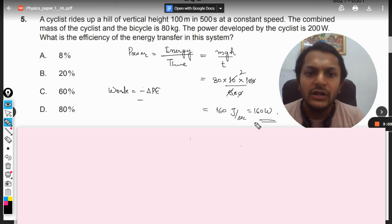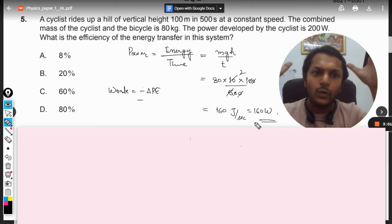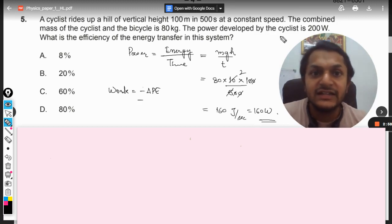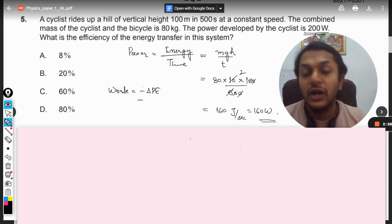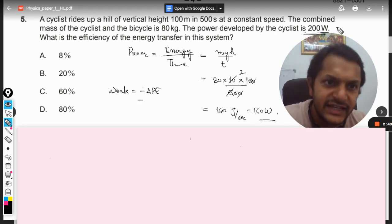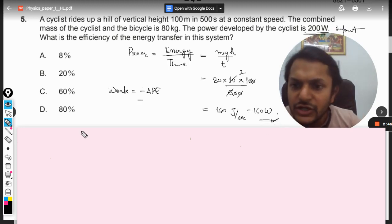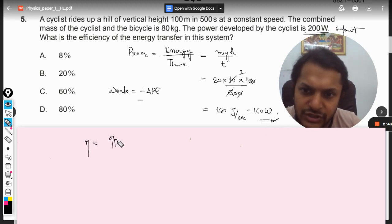So you can say 160 watts. So 160 watts is the output of the system that we have got, that overall it has utilized 160 watts of your energy. But the cyclist is developing a power of 200 watts actually, so there is a loss of power here.